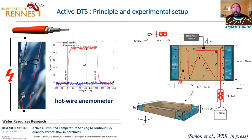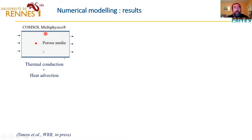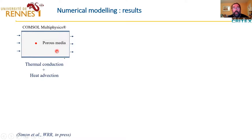Before doing the experiment, we also did some numerical modeling to check some solutions and to check the methodology to interpret the data. Typically what we did is some COMSOL Multiphysics modeling. Here you have the fiber optics cable, and you have the fully saturated porous media with some flow from left to right — this is the uniform flow. If you do not have any flow, if the groundwater discharge or groundwater flux is zero, then in that case you have only conduction.